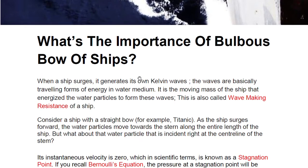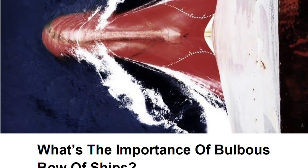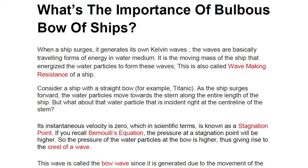When a ship is surging, the wave you see is known as a Kelvin wave. Waves are a traveling form of energy. The engine generates power, transfers it to the shaft, then to the propeller, which moves the ship — but the rest of the energy goes into energizing water particles. These energized particles create waves. This is called wave-making resistance: the energy spent by the vessel in overcoming it.